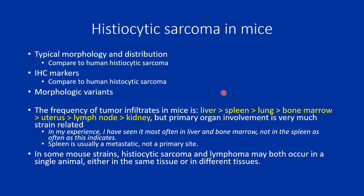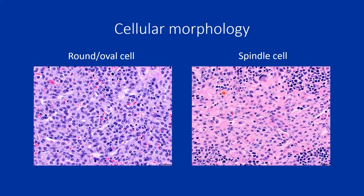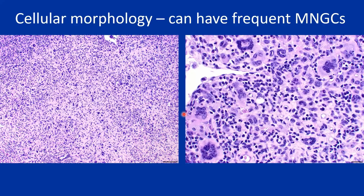You can get histiocytic sarcoma and lymphoma in the same animal. The morphology of the cells can vary widely, making the diagnosis hard. It can range from a typical round cell with more cytoplasm than lymphocytes, to being really spindle cell. I found a slide that really shows how it can have a lot of multinucleated giant cells — from a lymph node — and you can see them standing out on low power.